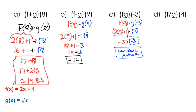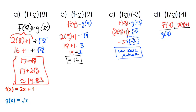For the last problem, we do f of 4 divided by g of 4. That's 2 times 4 plus 1 over the square root of 4. That gives us 8 plus 1 over 2, which is 9 over 2, or 4.5.